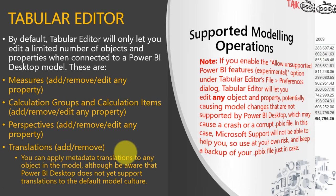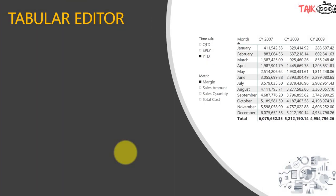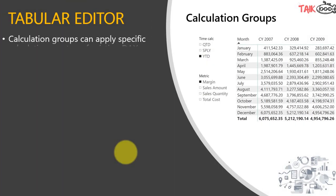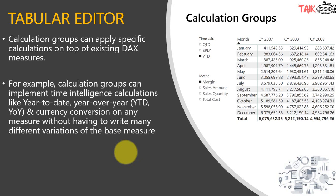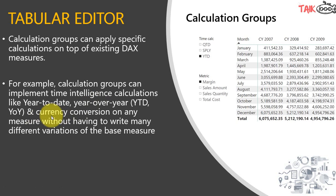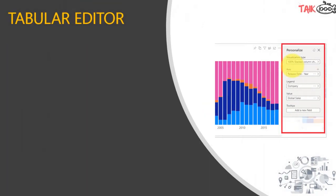Now let's look at how calculation groups work in Tabular Editor. Calculation groups can apply specific calculations on top of existing DAX measures. For example, calculation groups can implement time intelligence calculations like Year-to-Date or Year-over-Year, or currency conversions on any measure, without having to write many different variations of the base measure. These are really useful functions of Tabular Editor for Power BI.